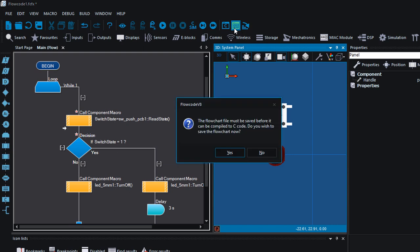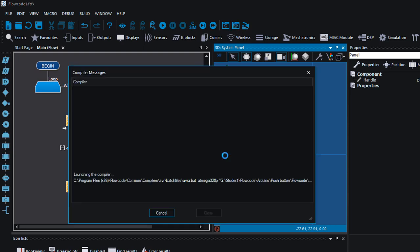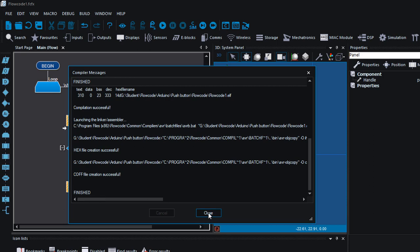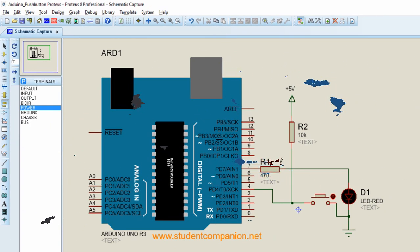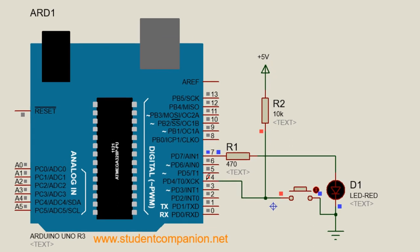Let's compile to hex — finished successfully. Let's simulate our circuit with Proteus. You can see we've got 5 volts on D4 by default because our push button is open and current flows from VCC to D4. When I press the button, the LED is on for three seconds and then after three seconds it's off. If I press it again it does the same — on for three seconds, then off.